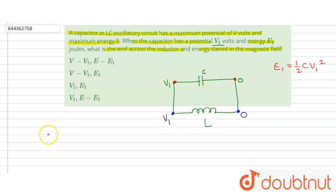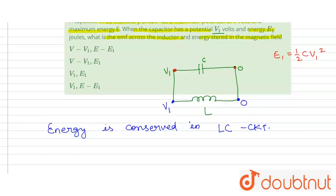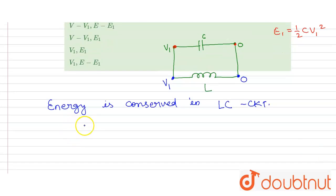And the energy, we know that the energy is conserved in the LC circuit. If the total energy is E, then it will be the energy of capacitor plus energy of inductance.